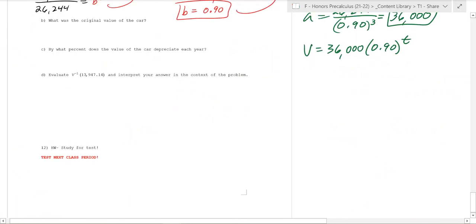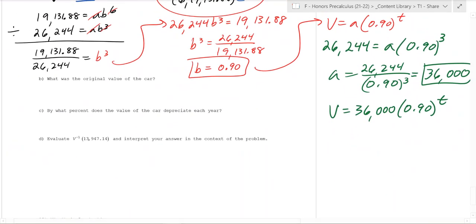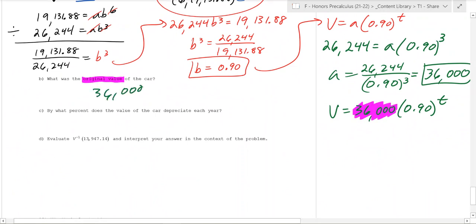So what was the original value of the car? That's the a value in the equation — $36,000. What percent does the car depreciate every year? Every year you're multiplying by 0.9, so the car depreciates by 10% every year. It would stay the same if the multiplier were 1, but it's going down by 10%.